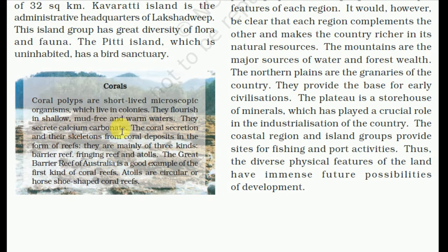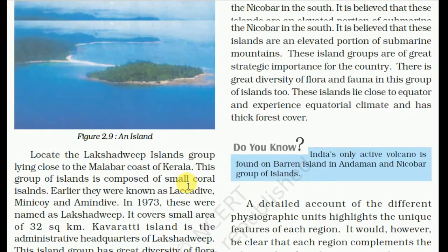Coral reefs are frequently asked about in UPSC exams. Coral polyps are short-lived microscopic organisms which live in colonies. They flourish in shallow, mud-free, and warm water. They secrete calcium carbonate. The coral skeletons form coral deposits in the form of reefs. They are mainly of three kinds: barrier reef, fringing reef, and atolls. The Great Barrier Reef of Australia is a good example of a barrier reef. Atolls are circular or horseshoe-shaped coral reefs.